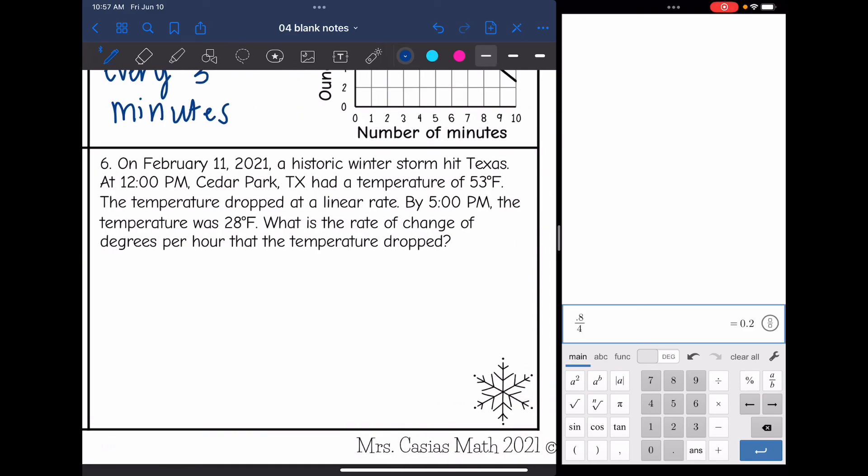Last one. On February 11th, 2021, a historic winter storm hit Texas. At 12 p.m., Cedar Park, Texas had a temperature of 53 degrees. The temperature dropped at a linear rate. By 5 p.m., the temperature was 28 degrees. What is the rate of change of degrees per hour that the temperature dropped? So let's start by figuring out what we want x and y to represent. So we are talking about the temperature changing. And it changes over a period of hours from 12 to 5. So x will be the number of hours. And then y will be the temperature.